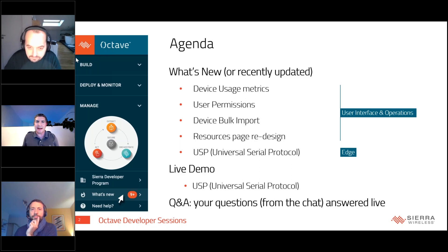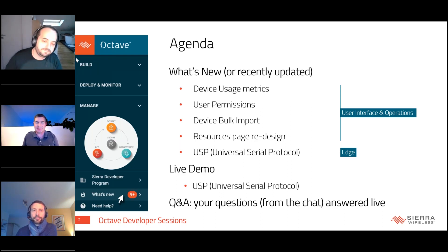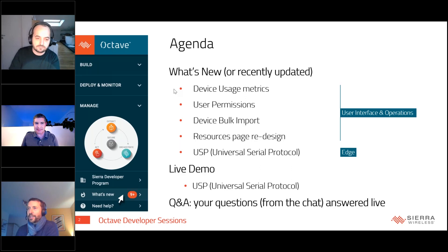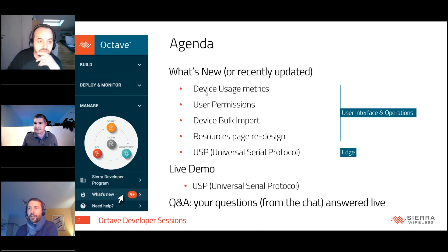And then Julien Vermillard — Julien is a principal engineer and Octave system architect. Julien will present a feature I know a lot of you in the developer community have been waiting for, namely the Universal Serial Parser. Augustin will be introducing four new features or updates provided to the Octave system, demonstrated through the Octave UI. Everything is also available through the APIs, so anything you want to do can also be done via API.